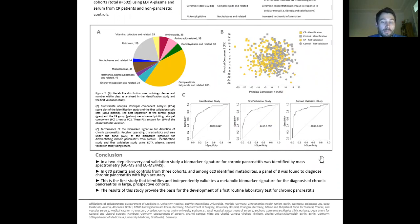So in conclusion, we have shown you a two-step discovery and validation study for a biomarker signature for chronic pancreatitis identified by mass spectrometry. We used a total of 670 patients and controls from three independent cohorts. Among 620 identified metabolites, we could boil it down to eight metabolites, which, if comprised in a signature, were diagnostic of chronic pancreatitis.